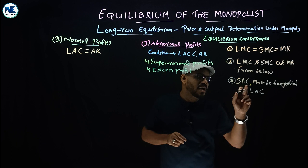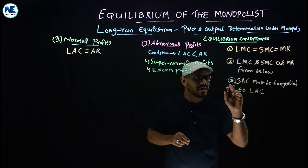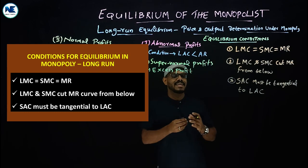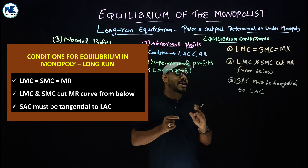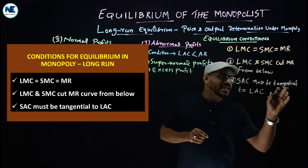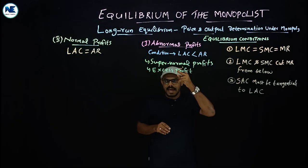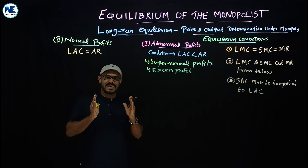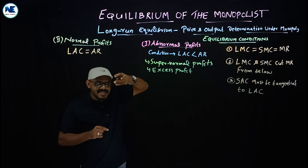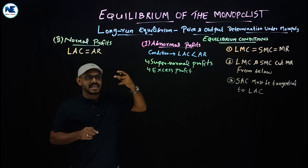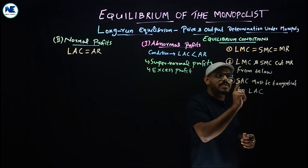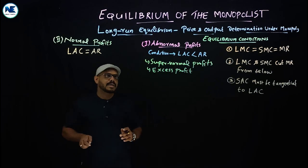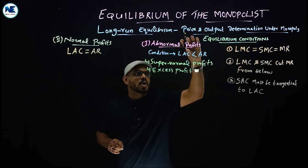The third condition is that short-run average cost (SAC) must be tangential to long-run average cost (LAC). Tangential means touching — not cutting or crossing, just touching at one point. So short-run average cost must be tangential to long-run average cost at the point of equilibrium.